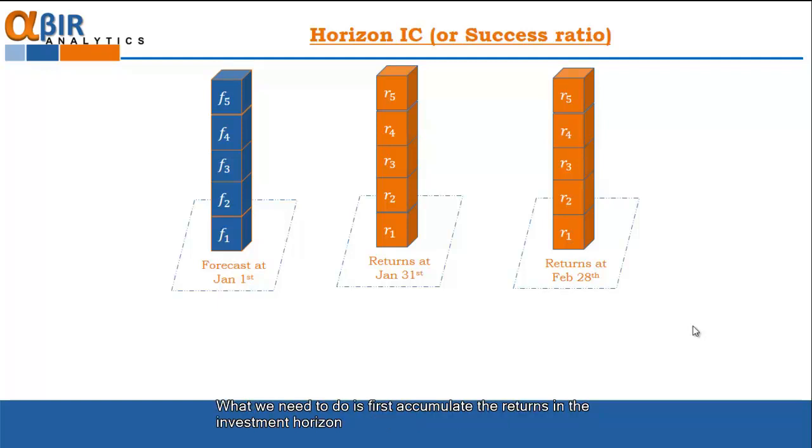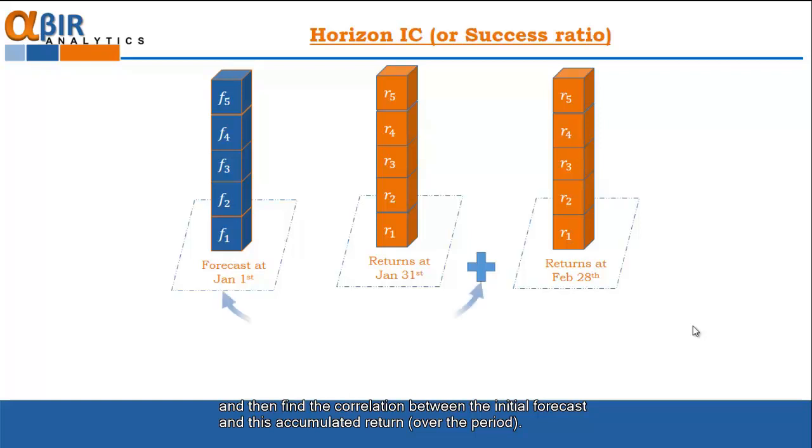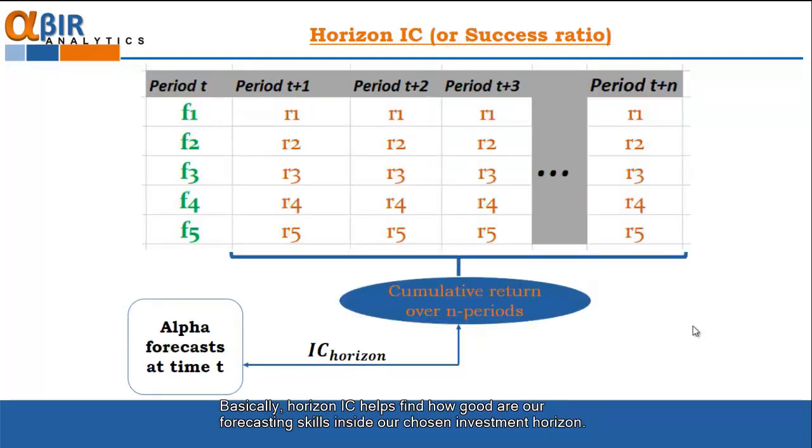What we have to do is to first accumulate the returns in the investment horizon, in this case in the two periods, and then find the correlation between our initial forecast and this accumulated return. This is also known as Horizon IC. Basically, the Horizon IC helps us to find how good are our forecasting skills inside our chosen investment horizon.